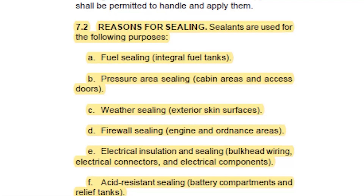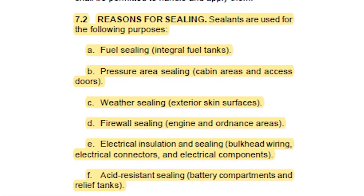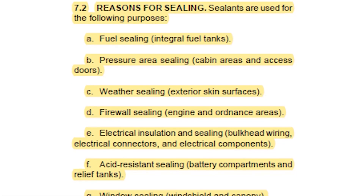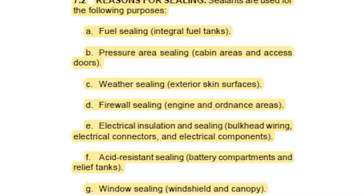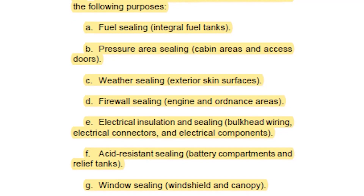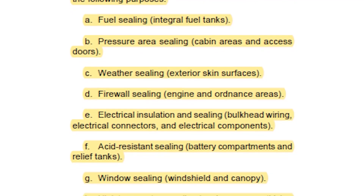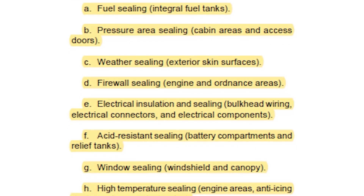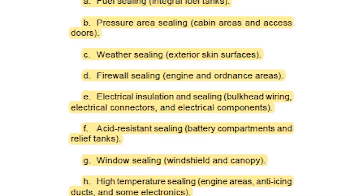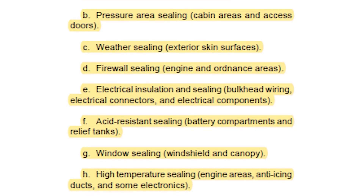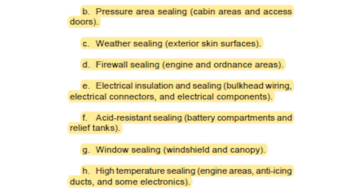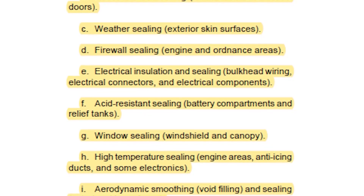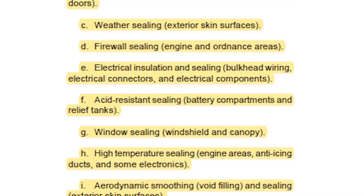Sealants are used for the following purposes: fuel sealing of integral fuel tanks; pressure area sealing of cabin areas and access doors; weather sealing of exterior skin surfaces; firewall sealing of engine and ordnance areas; electrical insulation and sealing of bulkhead wiring, electrical connectors and electrical components; acid resistant sealing of battery compartments and relief tanks.